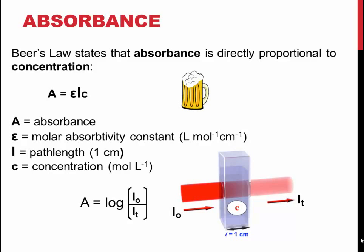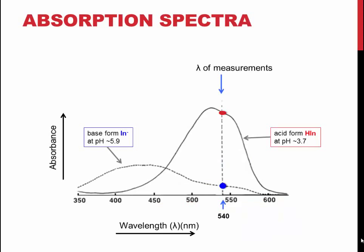The graph shown is the absorption of the methyl red conjugate acid and base at various wavelengths. The wavelength that has been chosen for this analysis is in the region where both molecules absorb reasonable amounts of light.